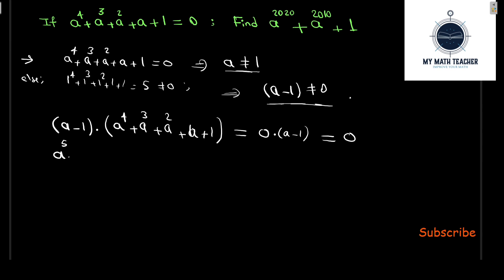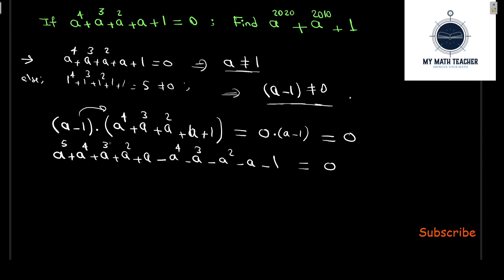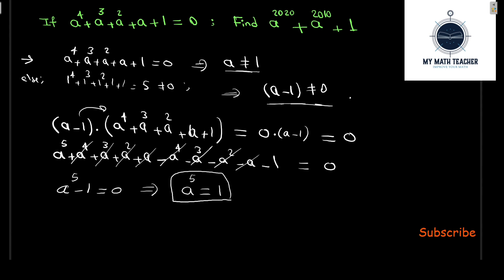Expanding, we get A^5 plus A^4 plus A^3 plus A^3, then minus A^4 minus A^3 minus A squared minus A minus 1. Simplifying, the A^4, A^3, A^2, and A terms cancel, leaving A^5 minus 1 equals 0, which implies A^5 equals 1.